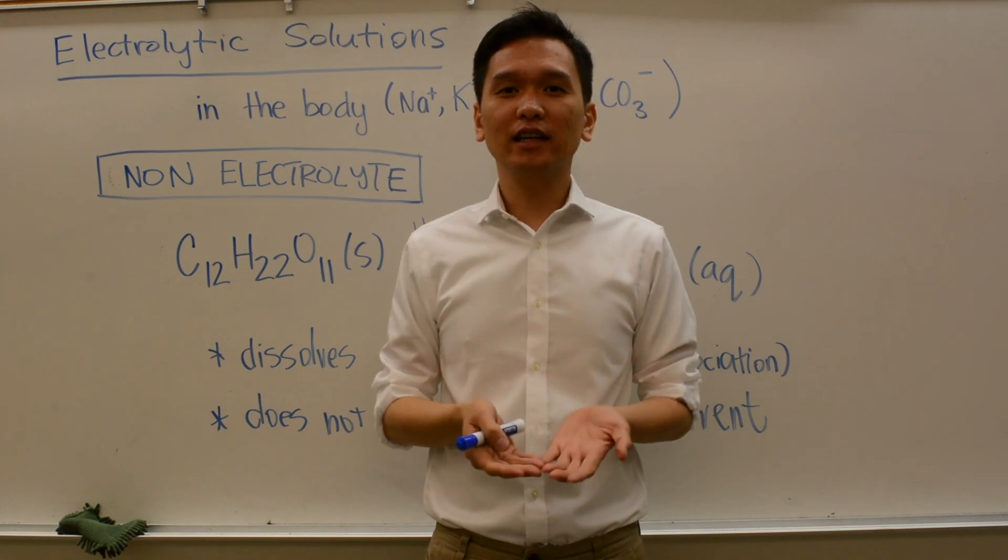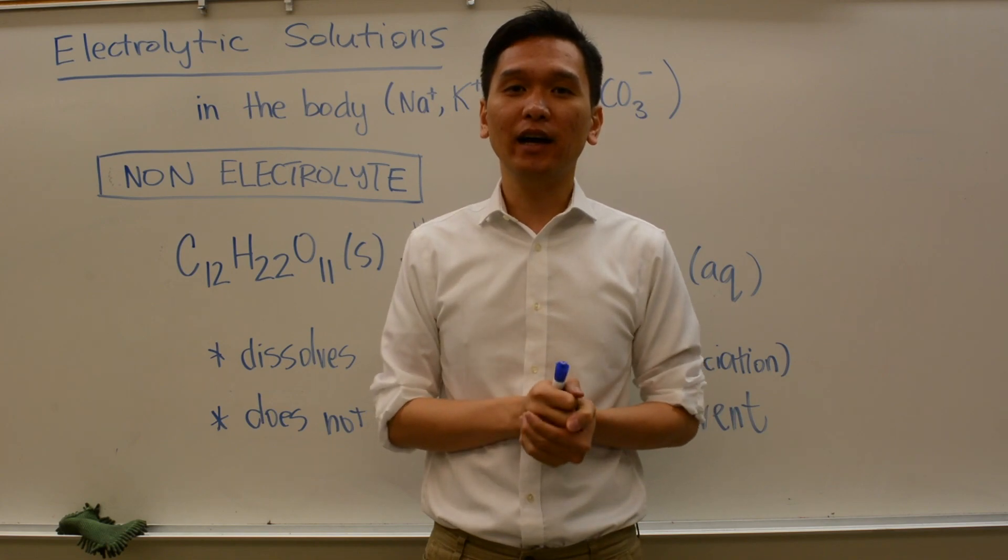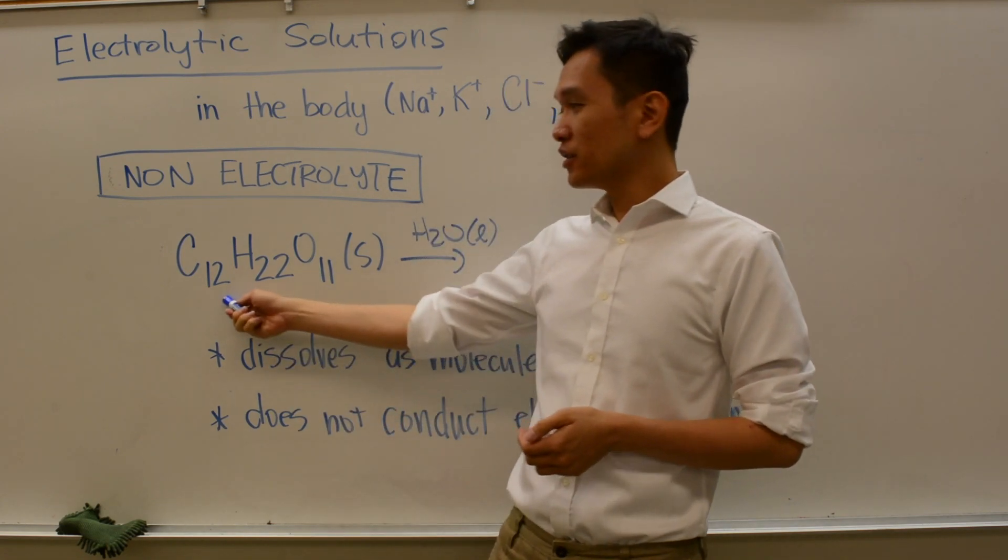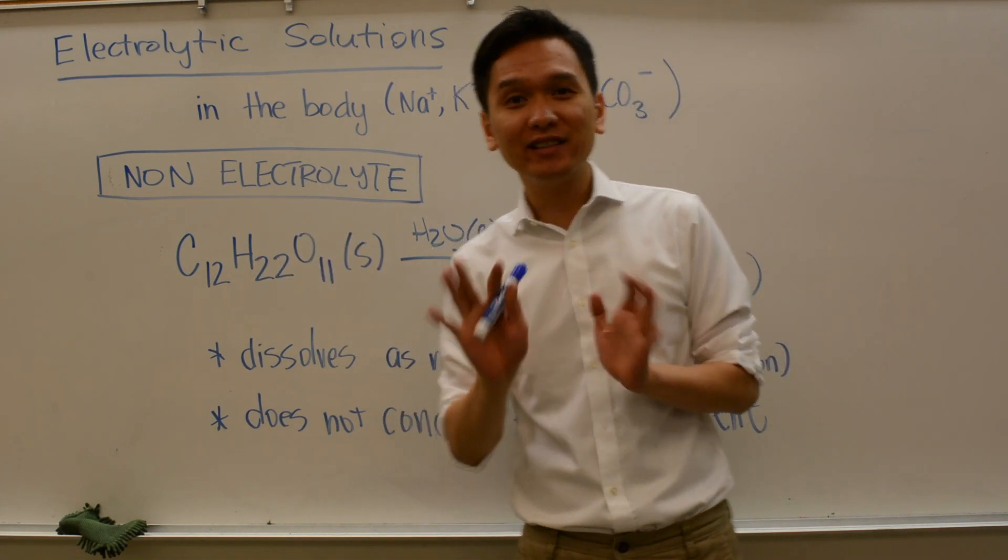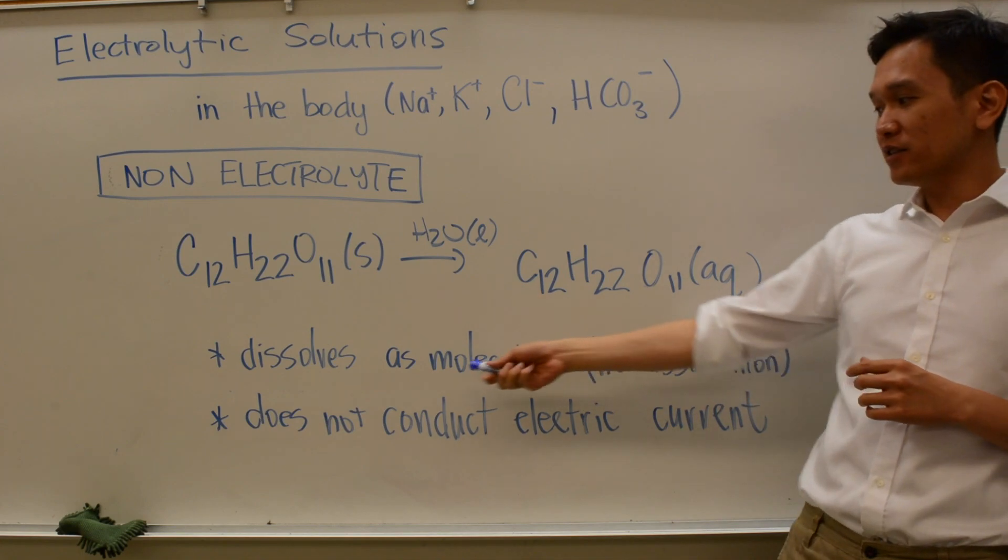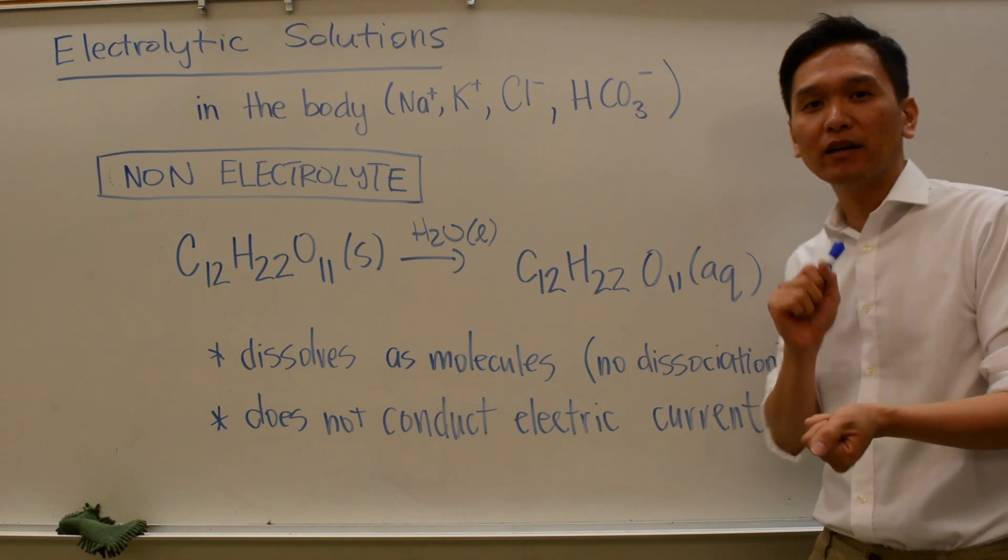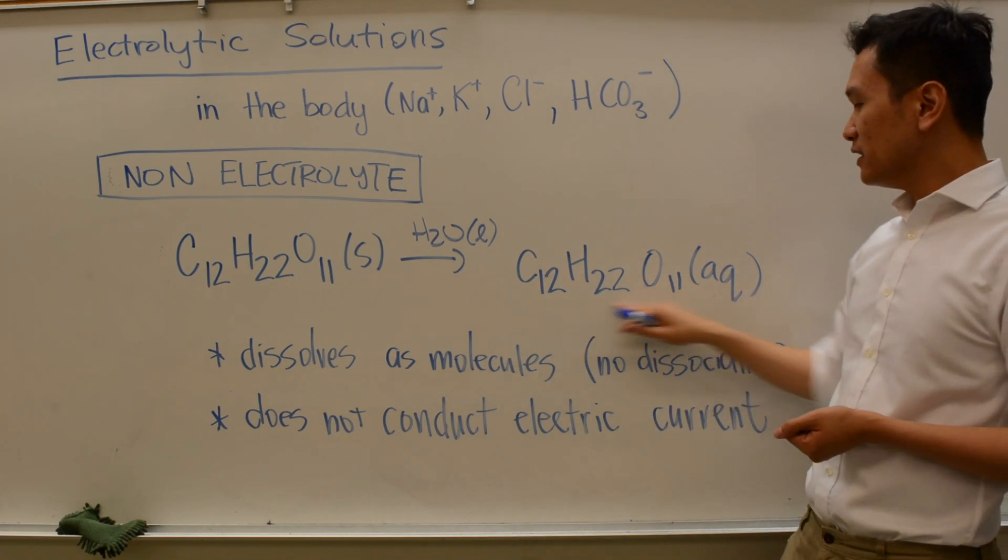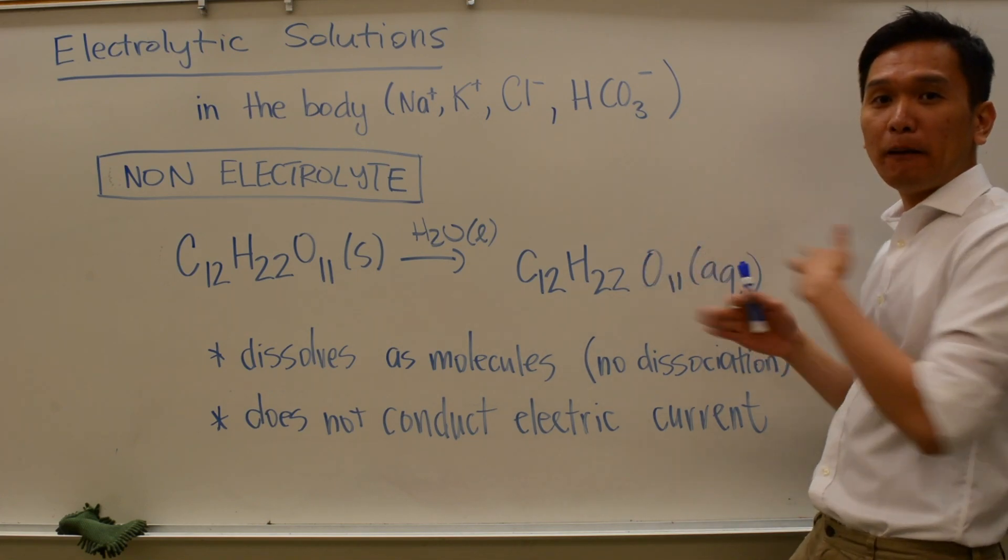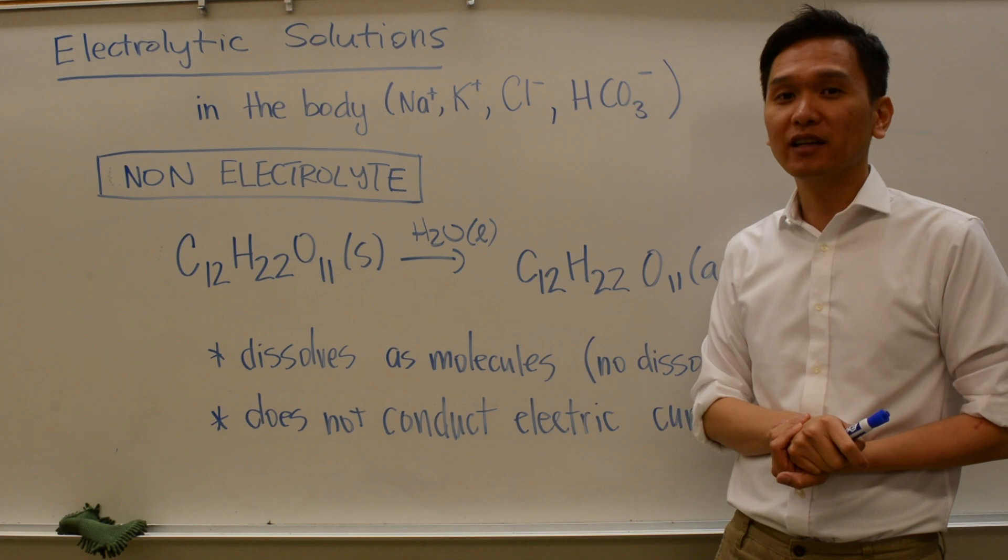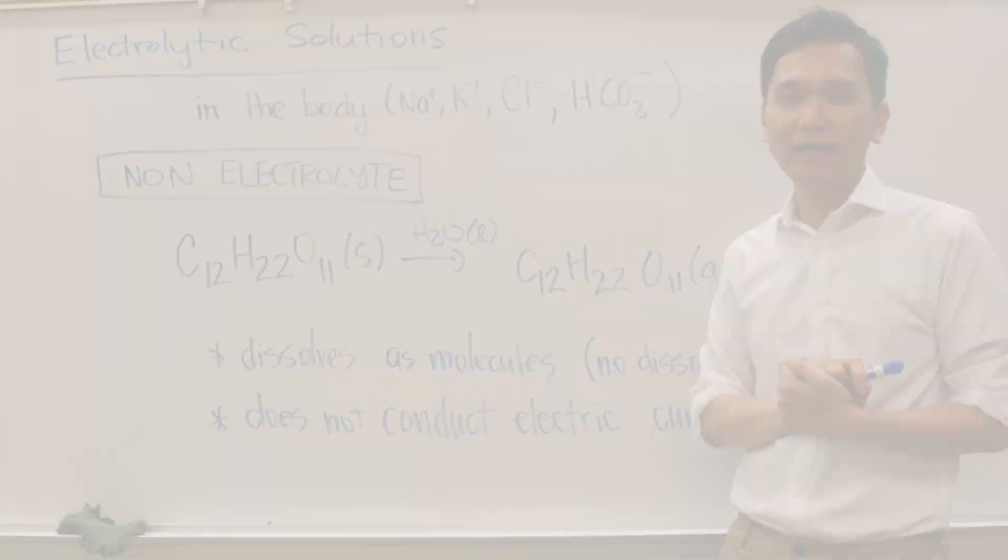Lastly, we have non-electrolytes. Non-electrolytes are molecules that when you dissolve in water do not form any ions. A prime example is sugar. Sugar is a molecule solid. When you dissolve it in water, it does dissolve completely, but it dissolves as intact whole molecules. It doesn't break apart and form any ions. Because there are no charges, it doesn't carry any electric current. So if you connect this with a light bulb, it will be lights out.